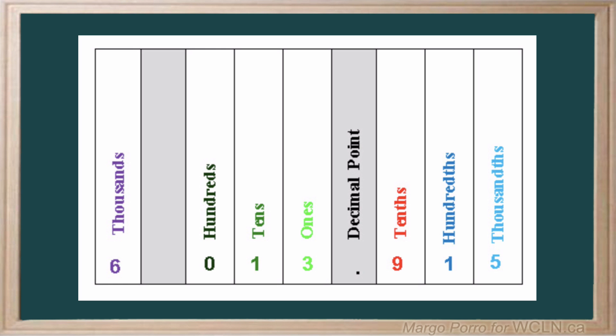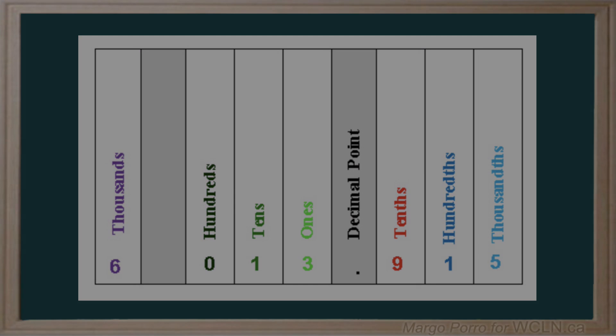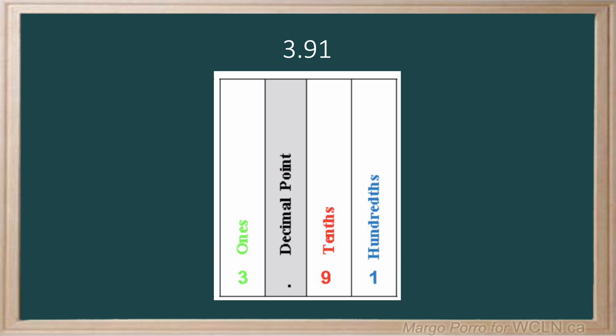So how do we say or read these numbers? What do they represent? If we look at a number like 3.91, you can see where each number fits in the chart. The three is three ones, the nine is nine tenths, and the one is one one-hundredth.